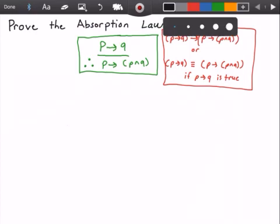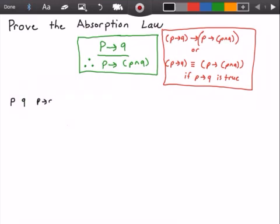So I'm going to need my P proposition and my Q proposition. And then we're going to need P implies Q, which is logically equivalent to not P or Q.